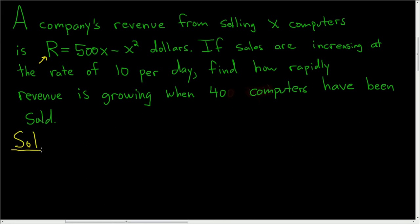That's a lot to read all at once. Let's go ahead and write down this formula we have for R. So we're told that this is the revenue from selling X computers, so it's 500X minus X squared.